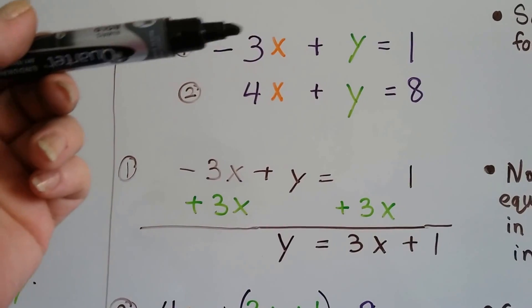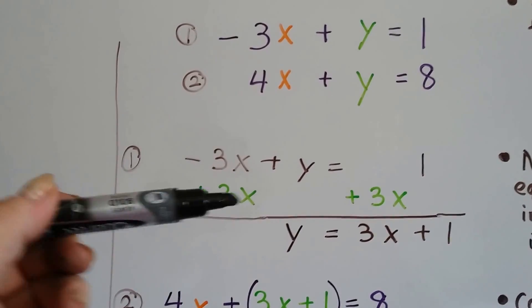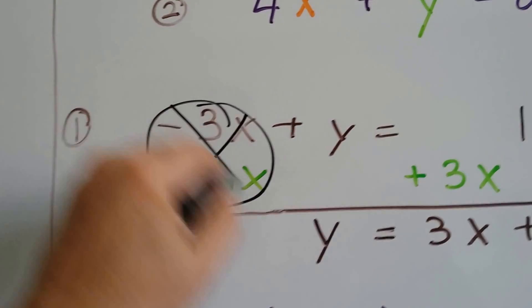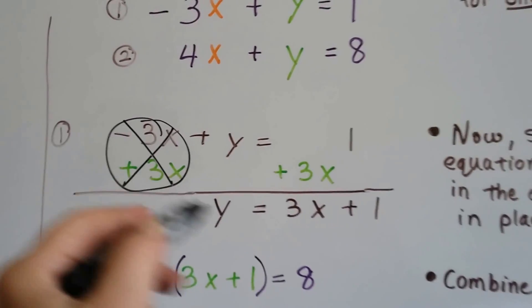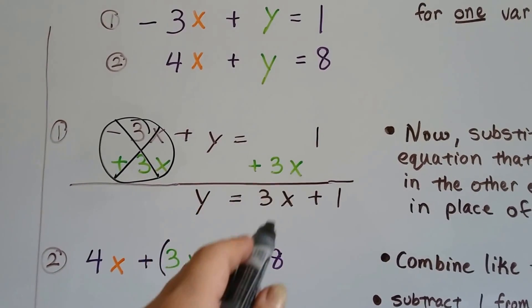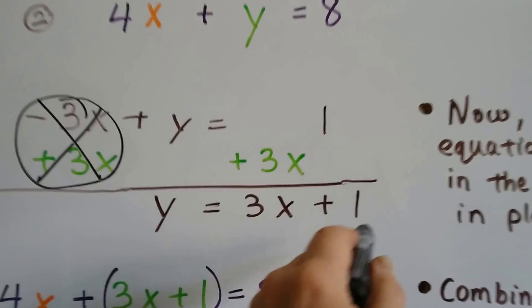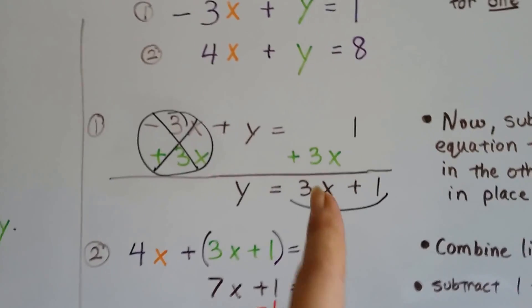We just add 3x to each side, and that makes a zero pair here. Minus 3x plus 3x, that's a zero pair. And when we add the 3x to this side, we get 3x plus 1. Yeah, look at that. Now we can say that that is what y is equal to, and we can plug that in to the other equation, the second one.